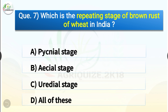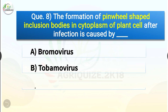Question number seven: Which is the repeating stage of brown rust of wheat in India? The options are pycnial stage, aecial stage, uredial stage, or all of these. The correct answer is option C, uredial stage. The uredial stage is the repeating stage of brown rust of wheat in India.